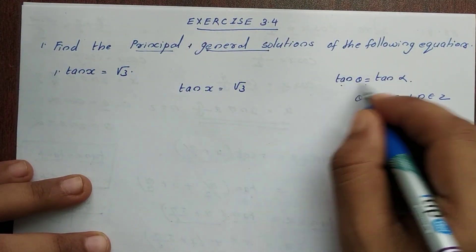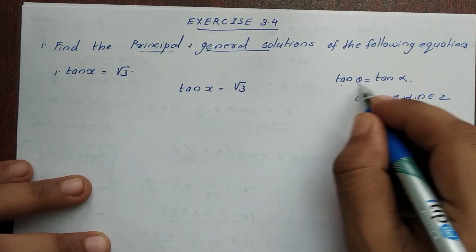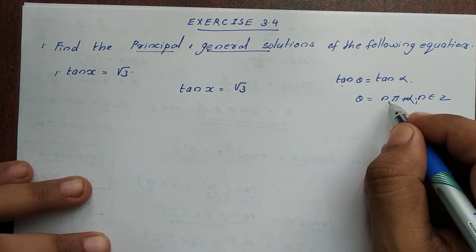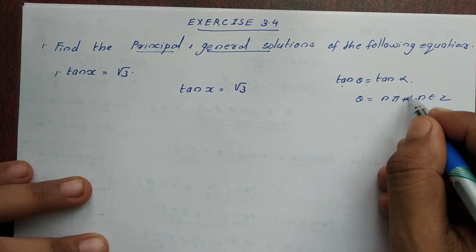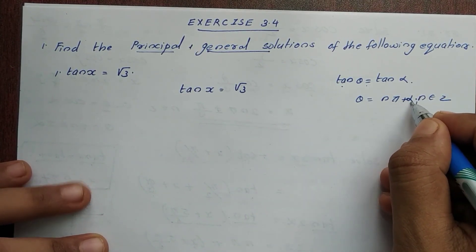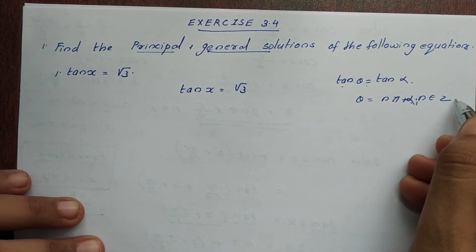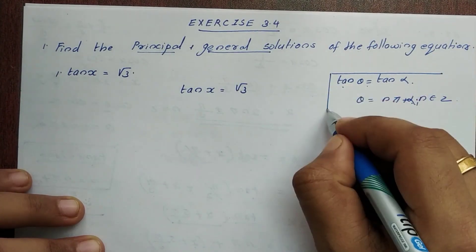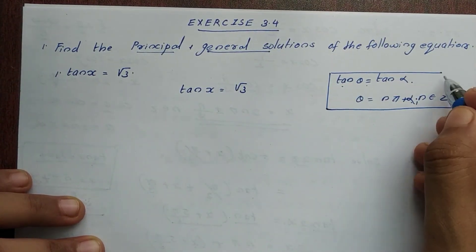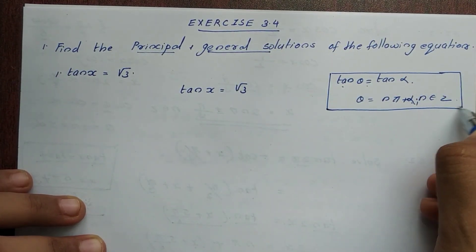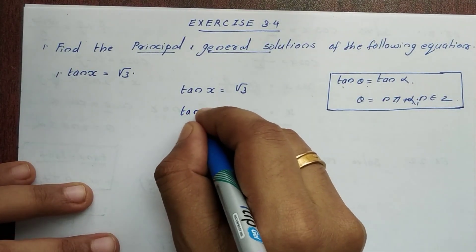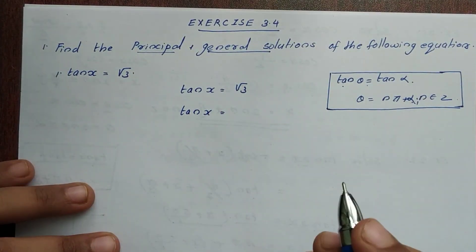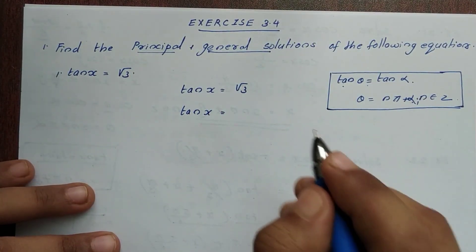Remember, if tan θ is equal to tan α, then θ is equal to nπ plus α, where n belongs to Z. So tan x equals root 3 — we need to identify the angle whose tangent is root 3.